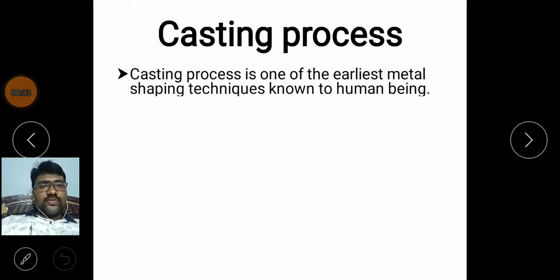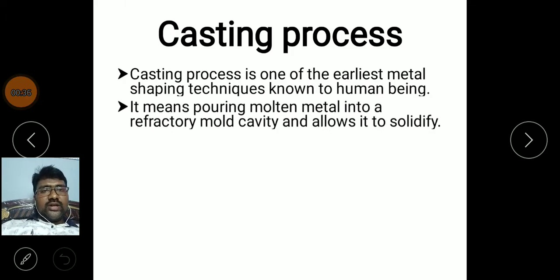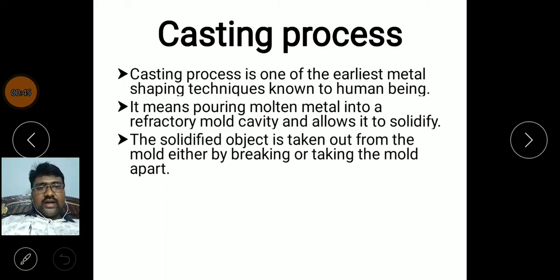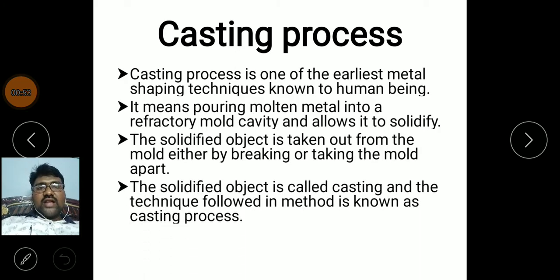Casting process is one of the earliest metal shaping process techniques known to human beings. It means pouring molten metal into a refractory mold cavity and allowing it to solidify. The solidified object is then taken out from the mold by breaking or removing the mold.